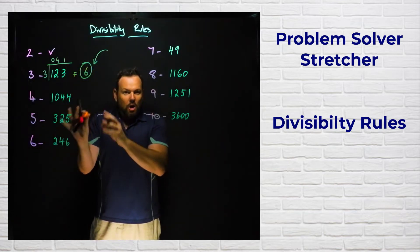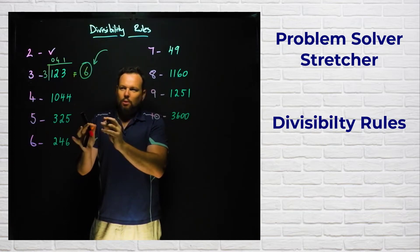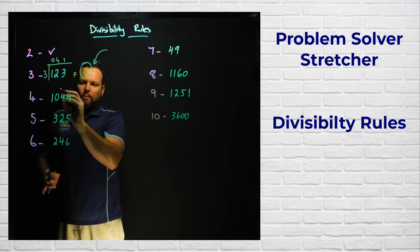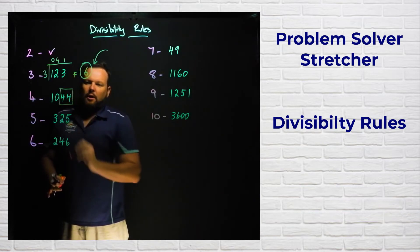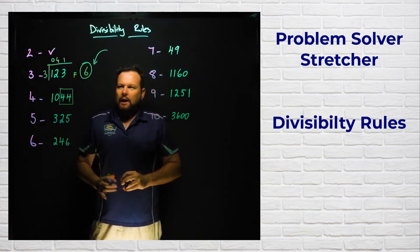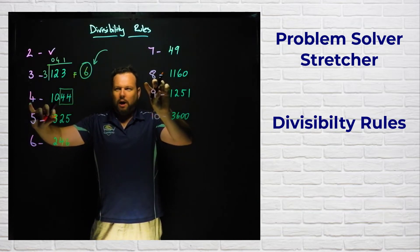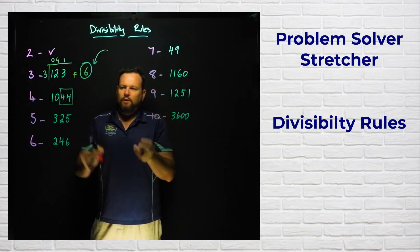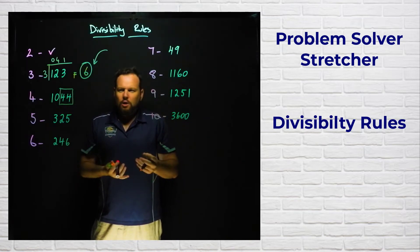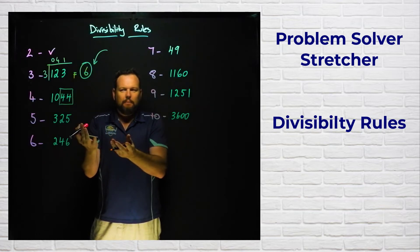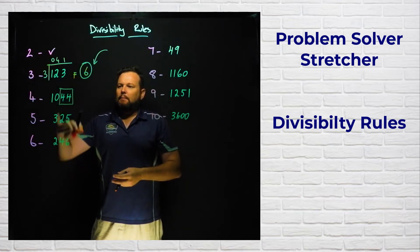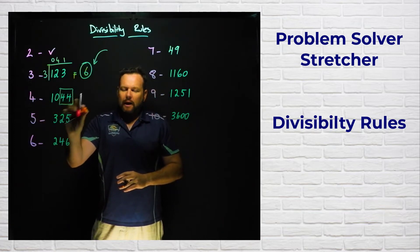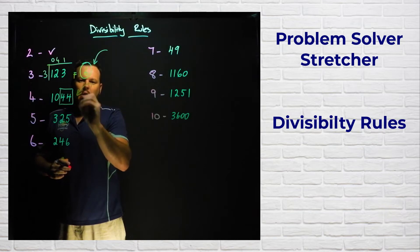Let's jump onto four. For four you look at the last two digits of the number. I find four and eight to be quite silly rules because you're looking at even numbers and if we're dealing with large numbers you look at them and you go 'oh well that's an even number so just divide it by two, do it quickly.' But there are rules for four and eight.